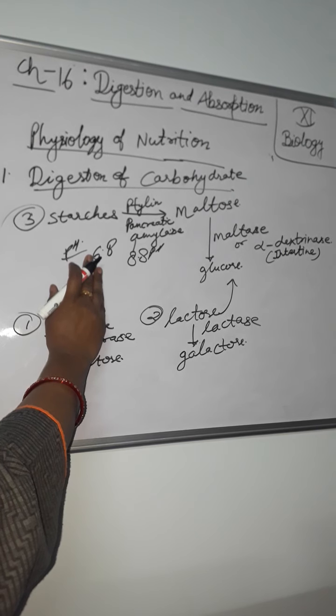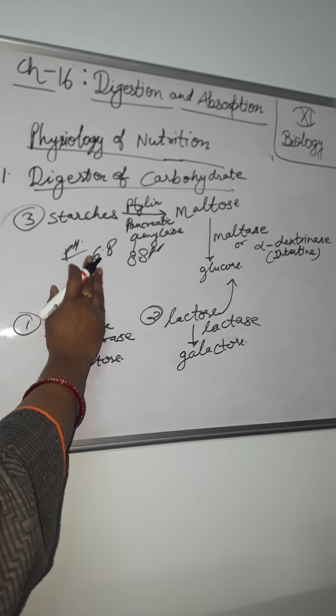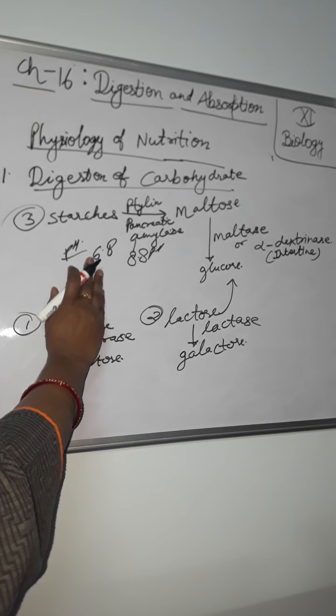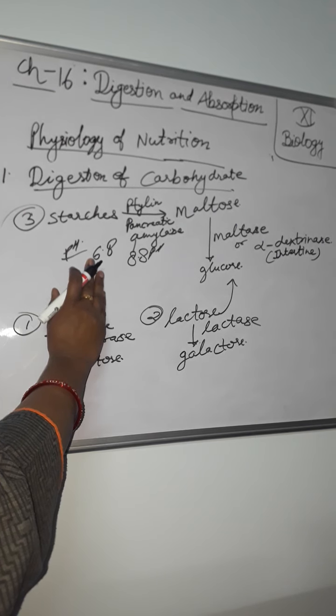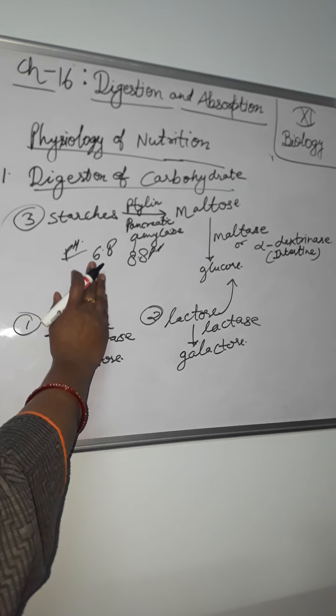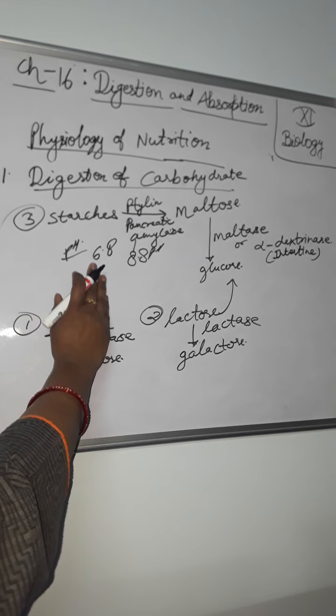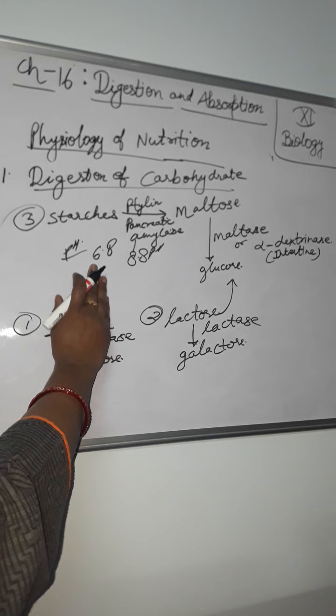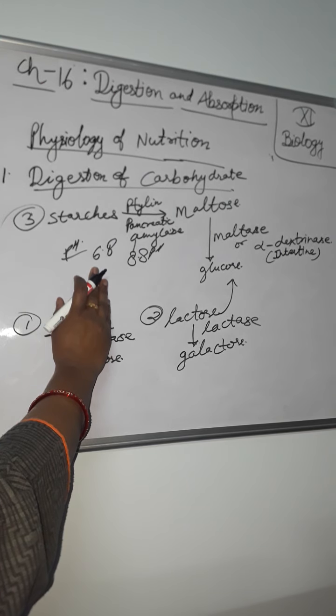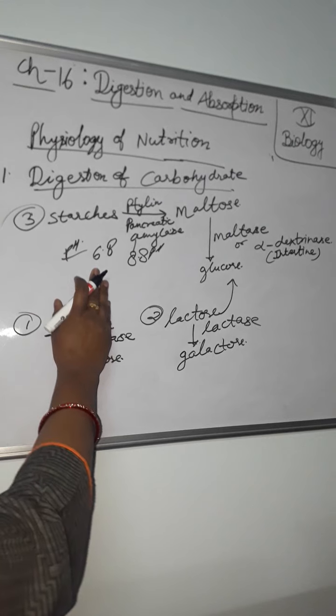And several times more powerful than salivary amylase. Within 15-30 minutes after the chyme mixes with pancreatic juice in duodenum, virtually all starches are digested. They are almost totally converted into maltose and other very small glucose polymers before they pass beyond duodenum.